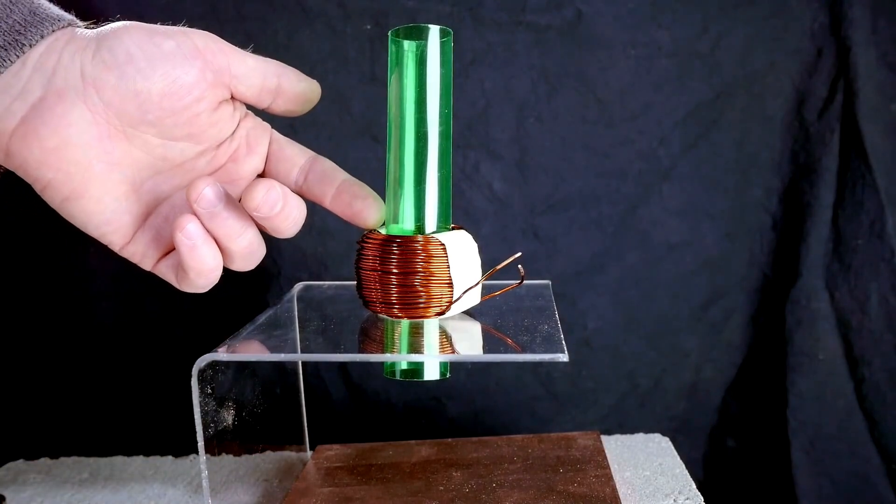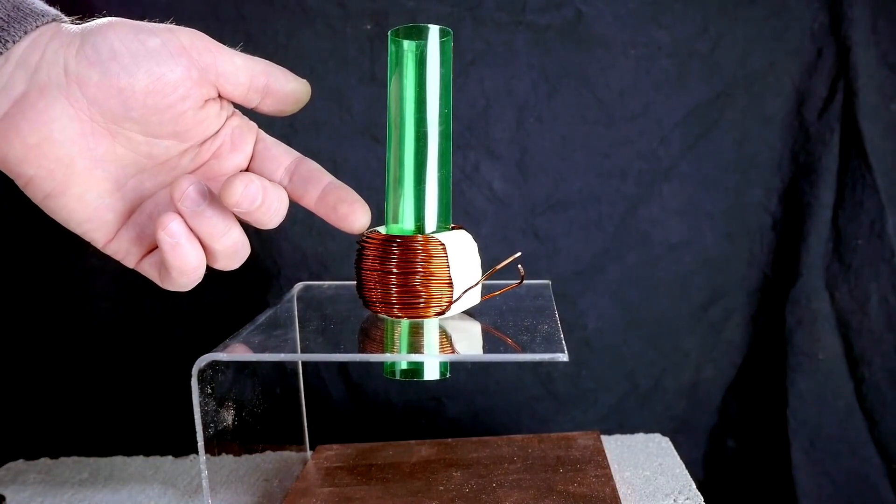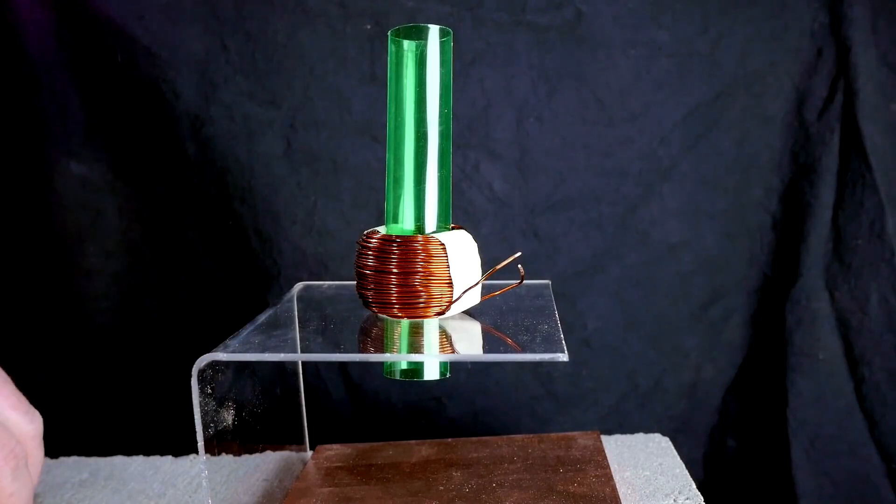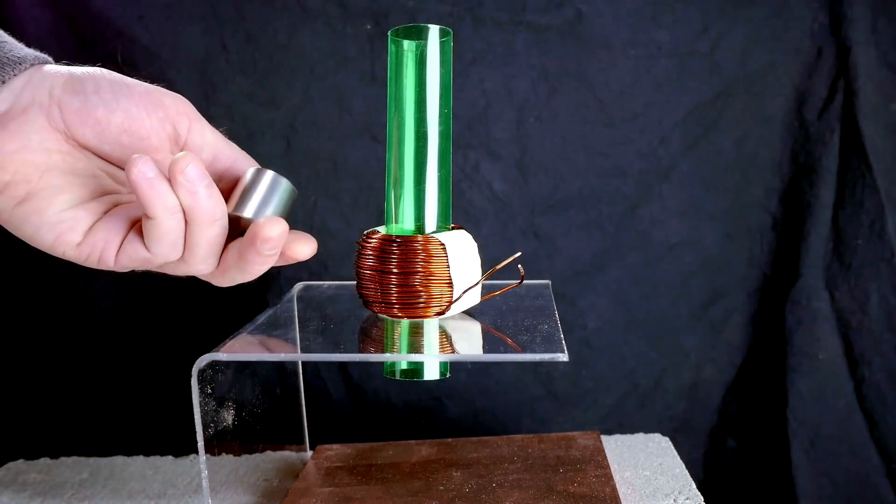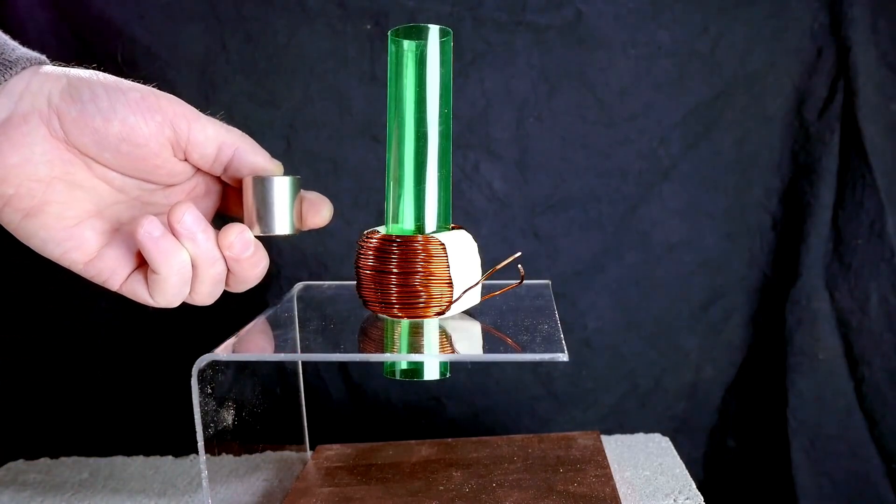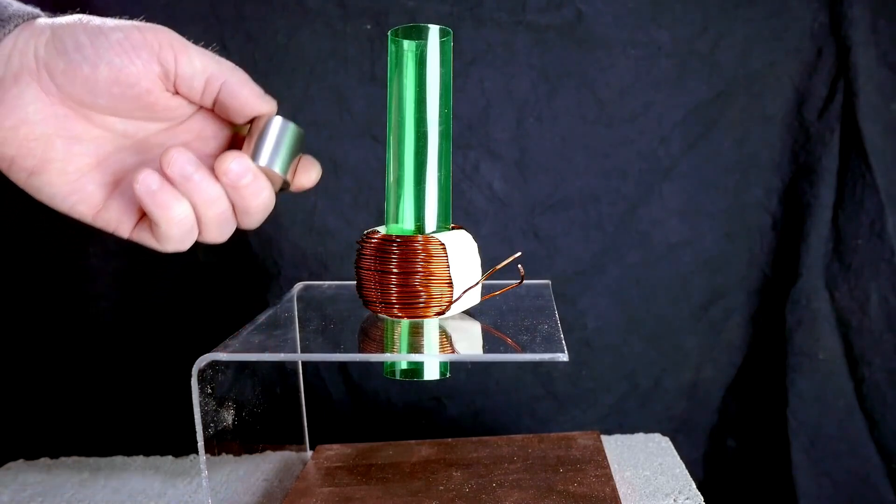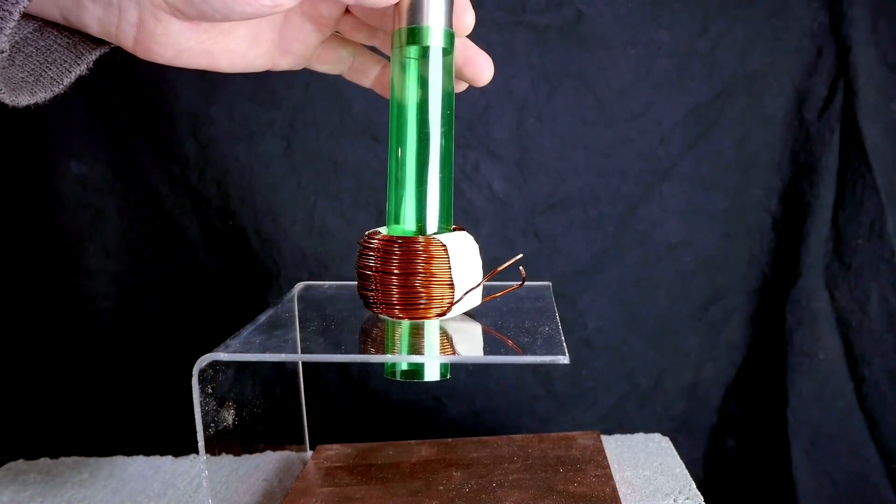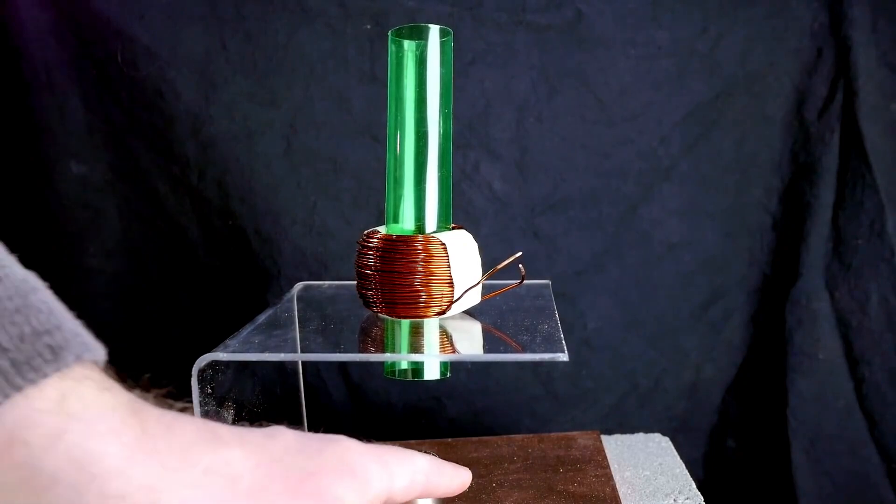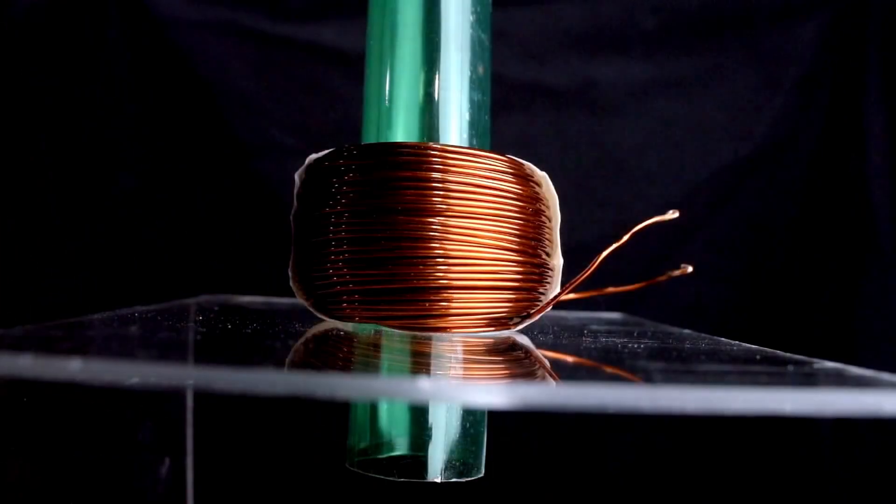This coil of wire is not connected at the ends and so it does not form a complete electrical circuit. If we tried to make electrons flow around this coil they would have nowhere to go, and we can tell this is the case because when I drop a magnet through the center, there is no resistance. It falls through the coil as if it were not even there.